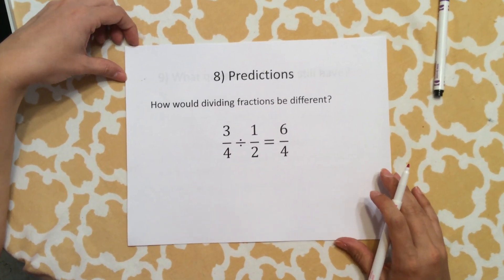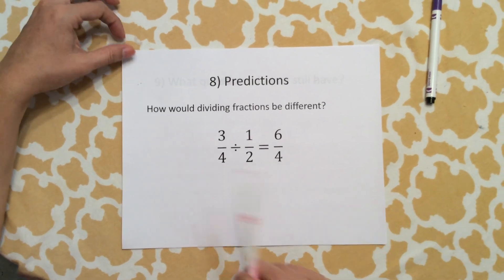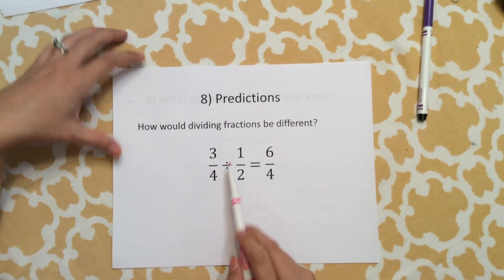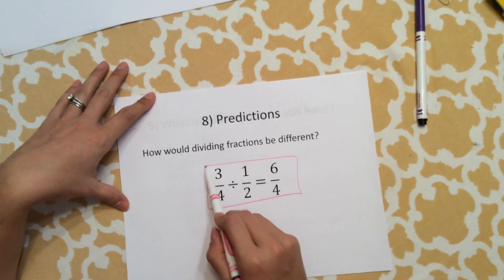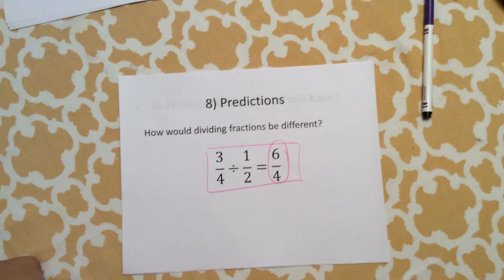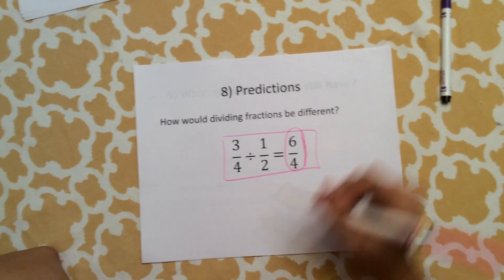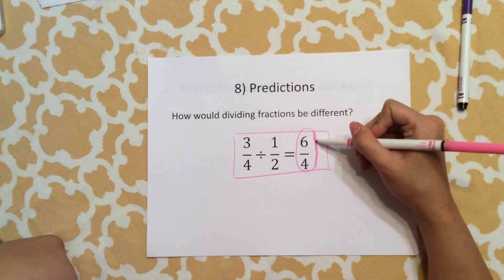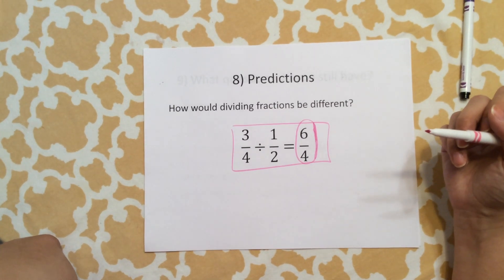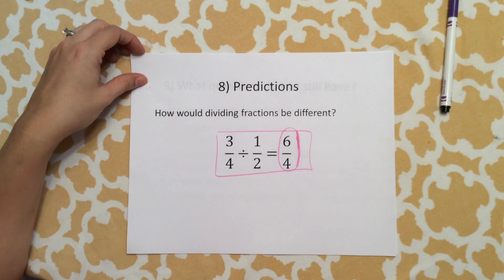So here's where we're going to do our predictions. Pretty soon we're going to get into dividing fractions. What do you think would be different about dividing fractions? Here's an example of a dividing fractions problem that's solved. How do you think we came up with this number? If you don't have a prediction, you need to have a prediction—come up with something to put in there. It doesn't have to be necessarily correct, but you need to have a prediction for dividing fractions. Do not leave it blank.